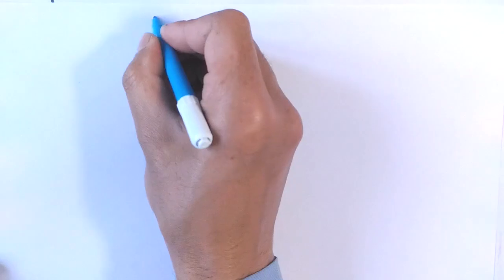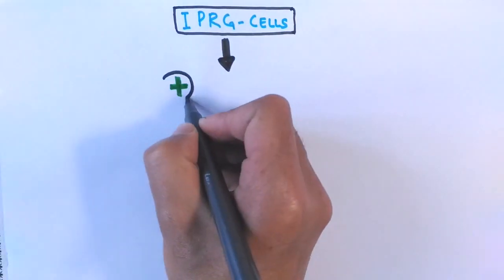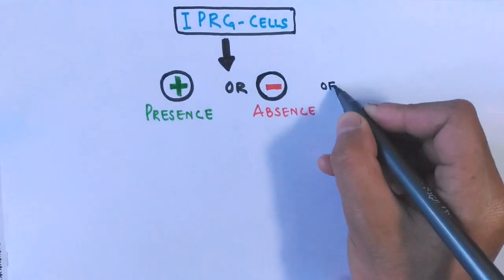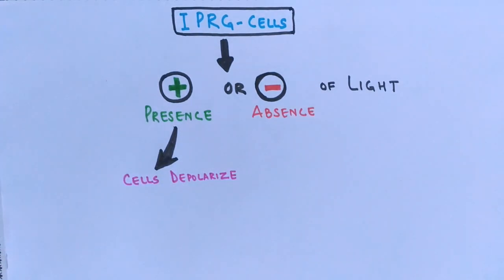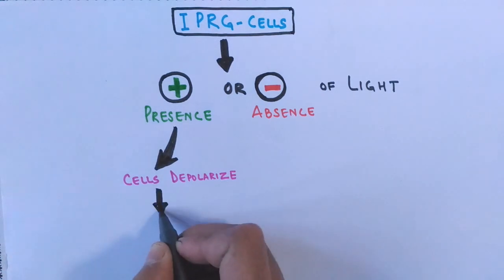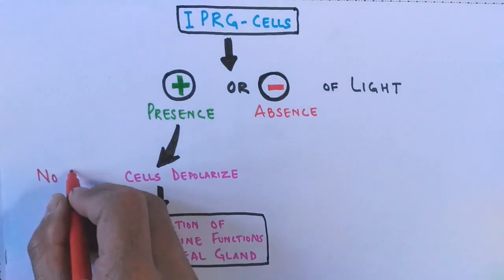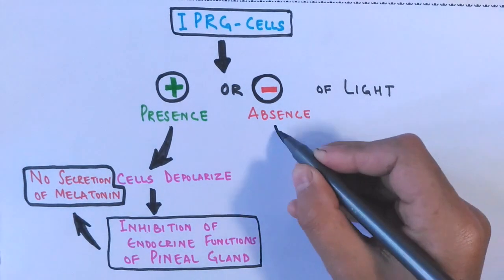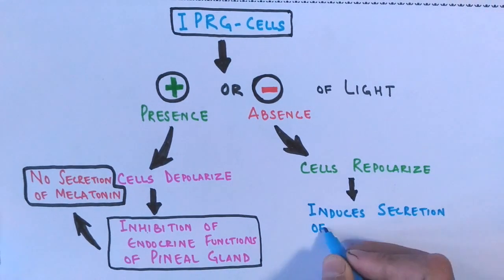By the circadian clock, we detect the timing of sleep and wake cycles through secretions from the pineal gland. Under the presence of light, retinal ganglion cells depolarize — unlike rod and cone cells which repolarize in light. This depolarization causes inhibition of the endocrine functions of the pineal gland, meaning no melatonin is secreted. On the other hand, in the absence of light — at nighttime — these cells repolarize, which induces melatonin secretion from the pineal gland.